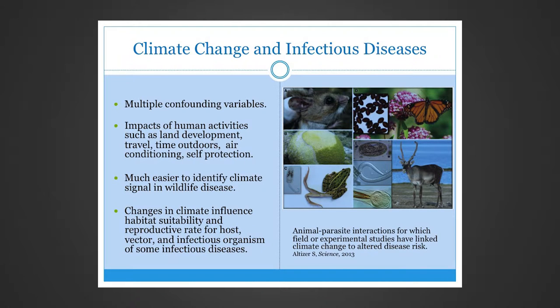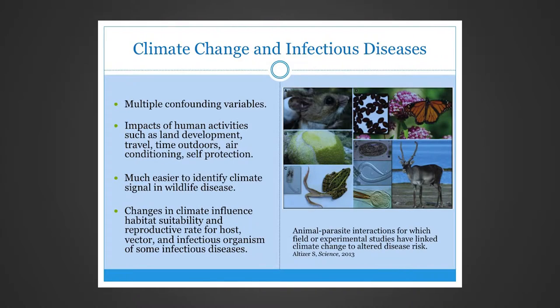It's much easier to identify a climate signal in changes in wildlife diseases. For example, an increased intensity and range of bird malaria has been easier to correlate with changes in temperature than changes in human diseases. Experiments have linked change in disease risk with climate change. We do know that climate influences habitat suitability and reproductive rates for hosts, vectors, and microorganisms of some infectious diseases.